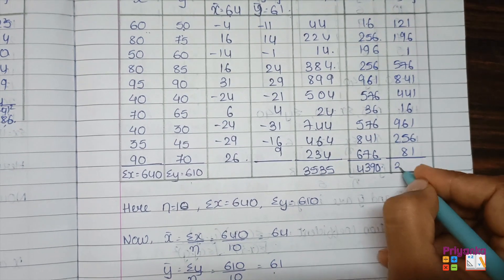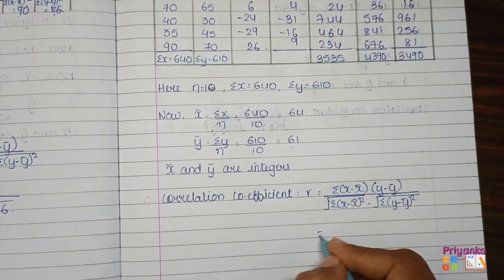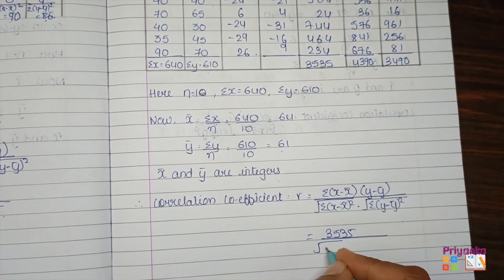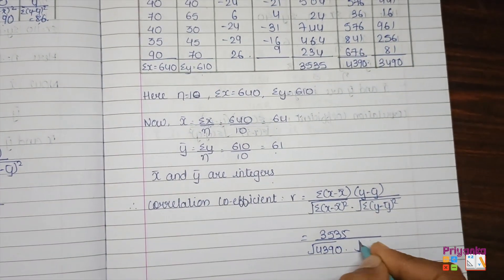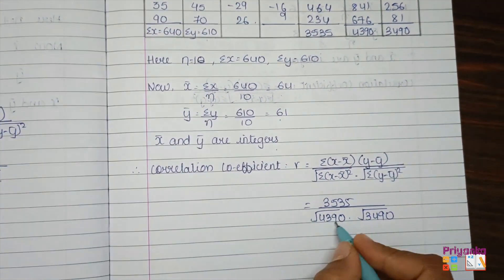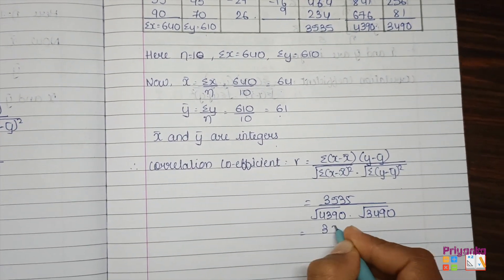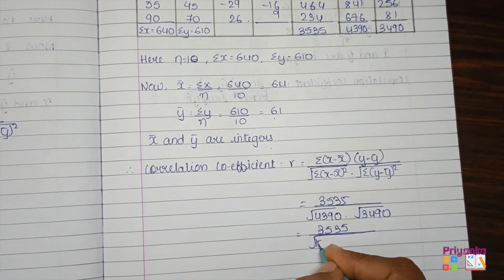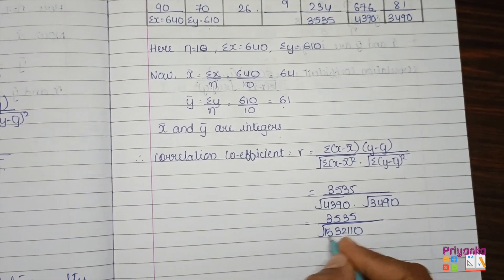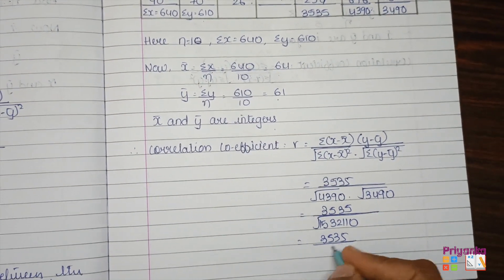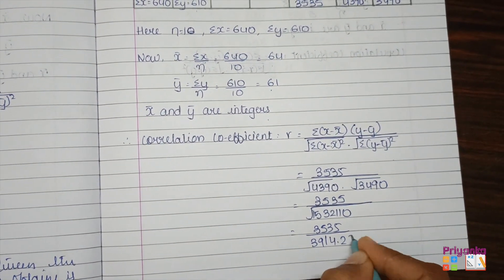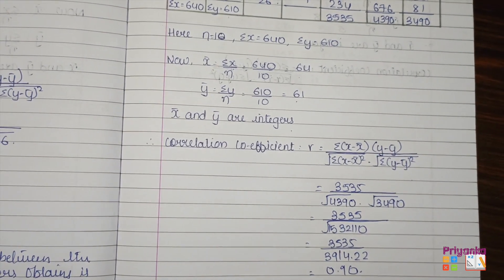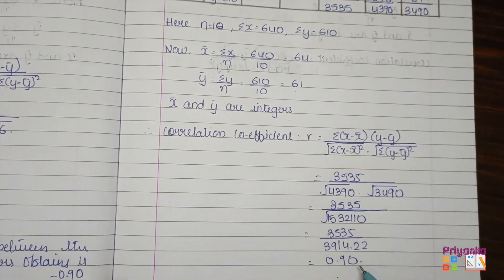Squaring the (y − ȳ) column: 121, 196, 615, 761, 576, 169, 625, 81 — total Σ(y − ȳ)² = 3490. Substituting into the formula: r = 3535 / √(4390 × 3490). Multiply 4390 × 3490 = 15,321,100, then √15,321,100 ≈ 3914.22. Therefore r = 3535 / 3914.22 ≈ 0.90. The correlation coefficient between marks of accountancy and statistics is 0.90.